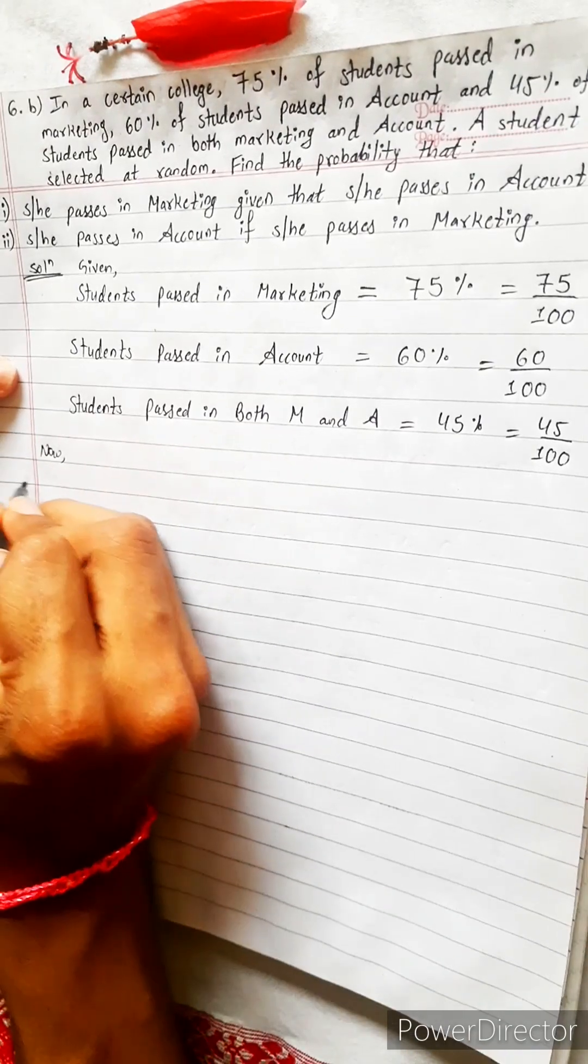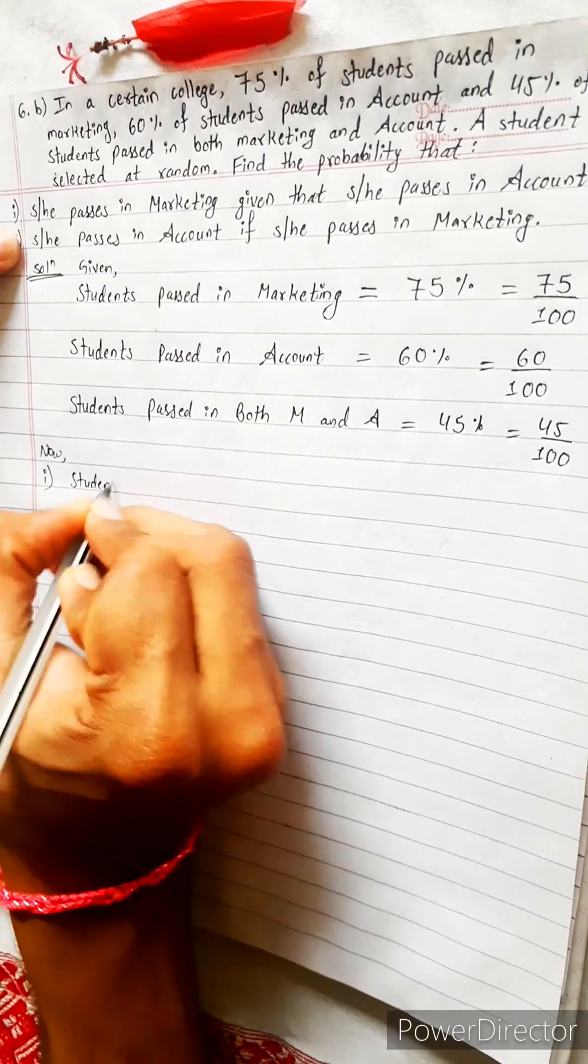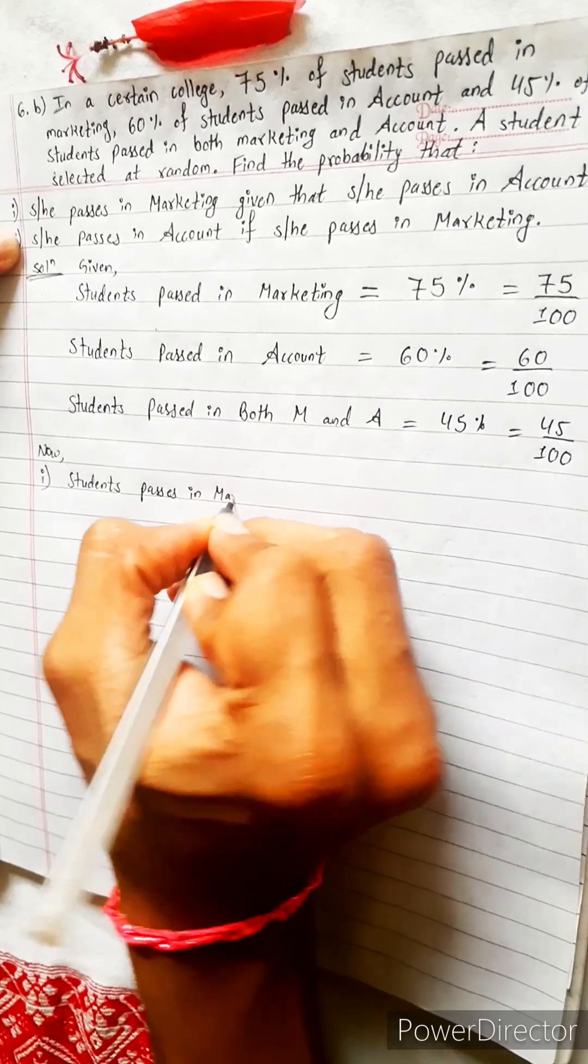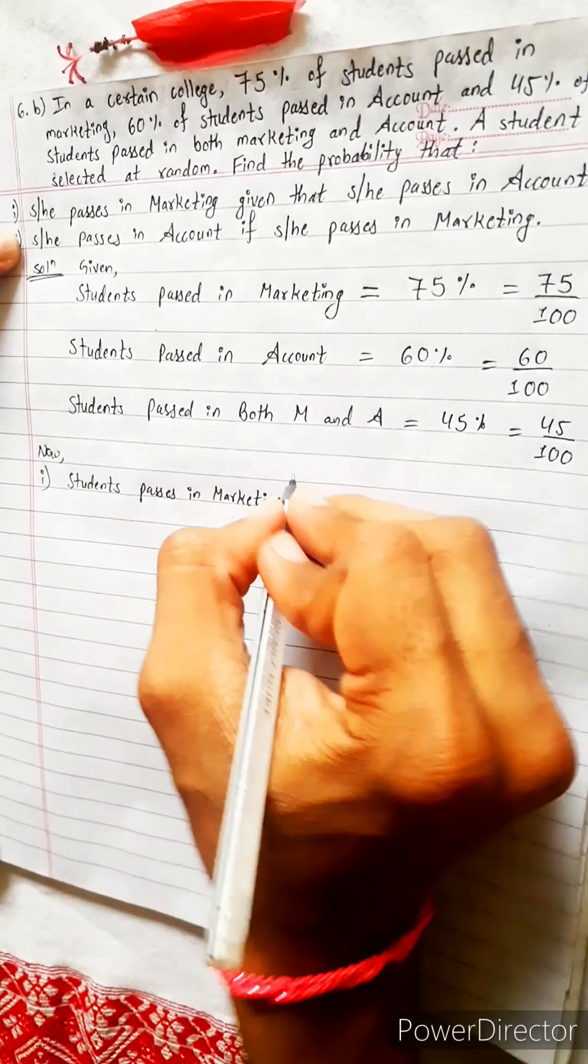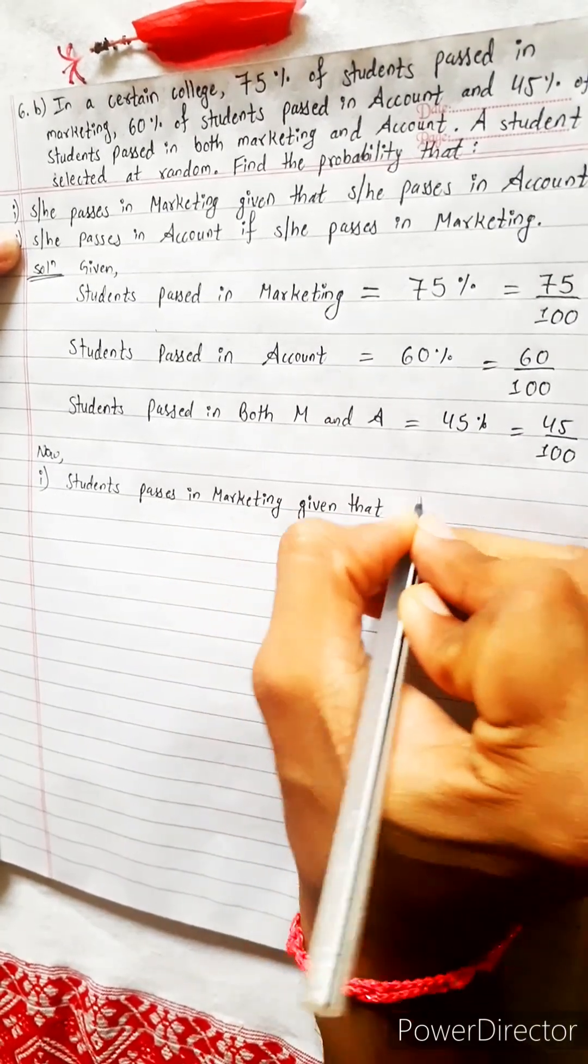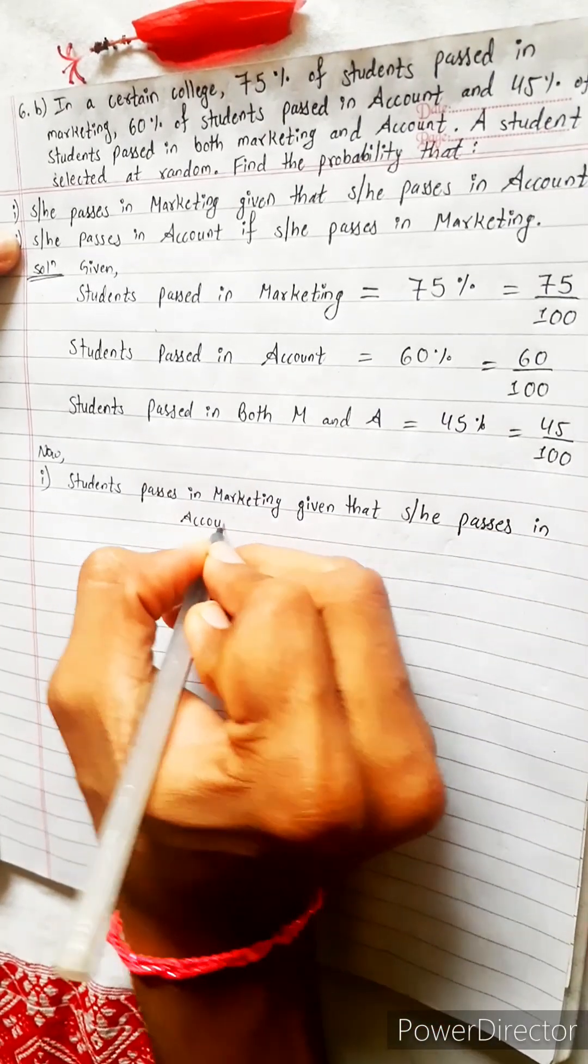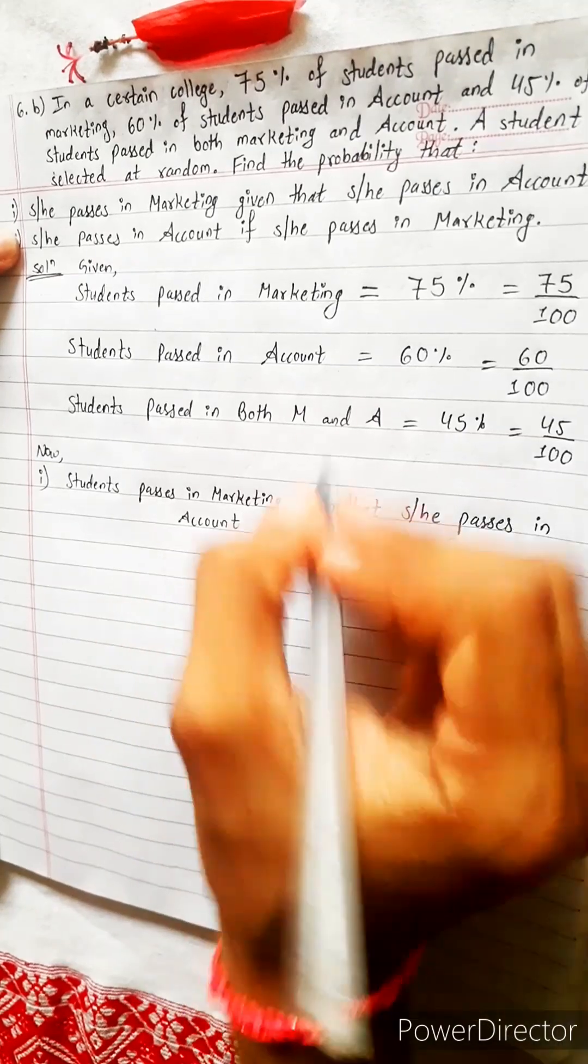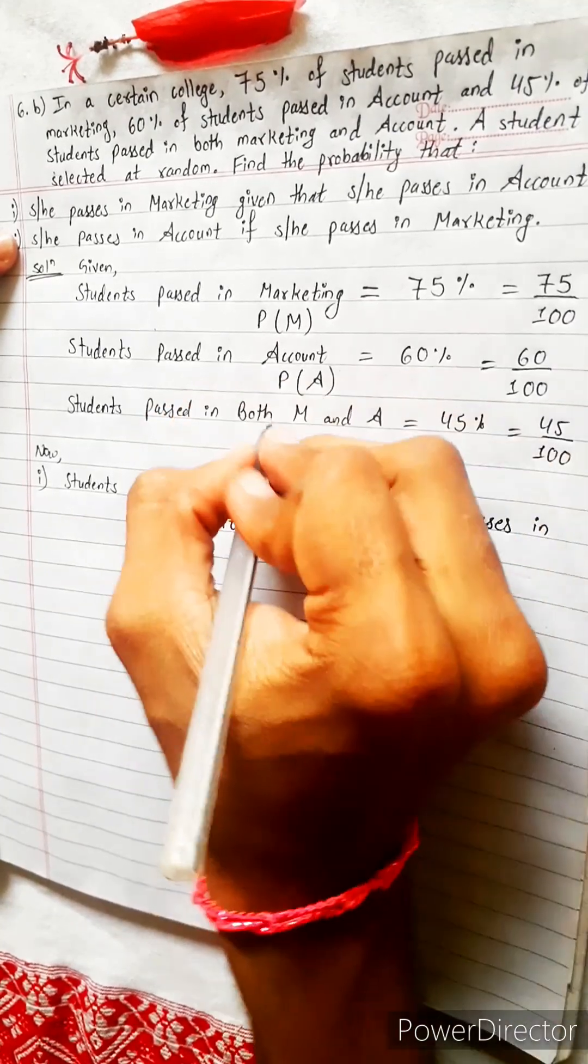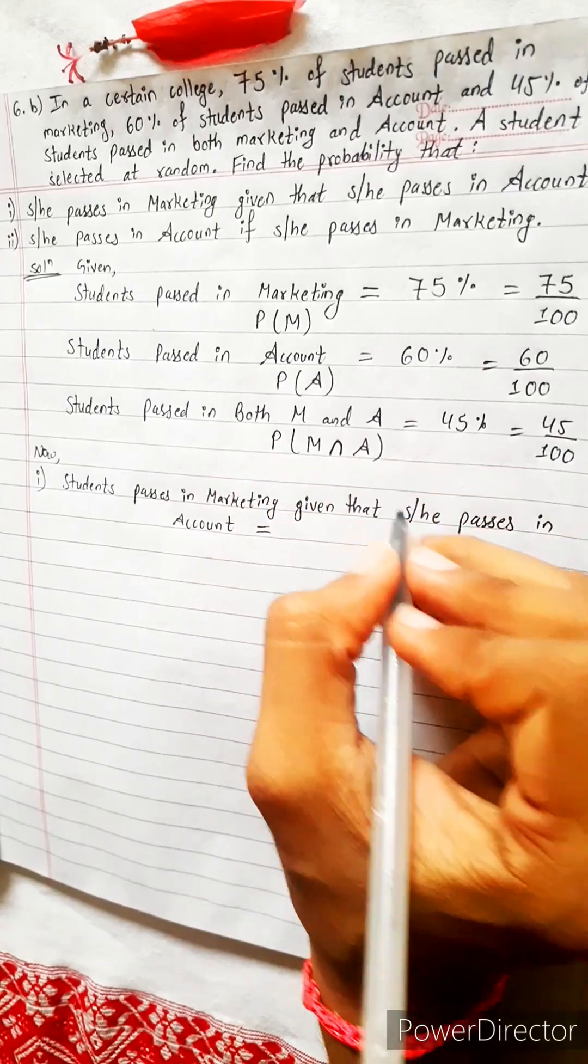Now what is this question asking us? Students passes in marketing given that he passes in account. This equals - look here, at first this is probability of marketing, and this is probability of accounting. This is probability of both marketing and accounting.